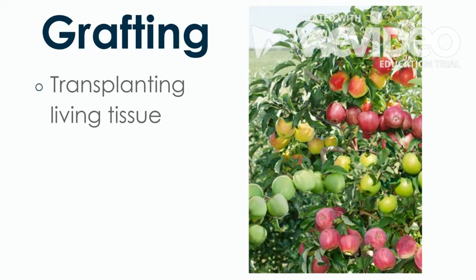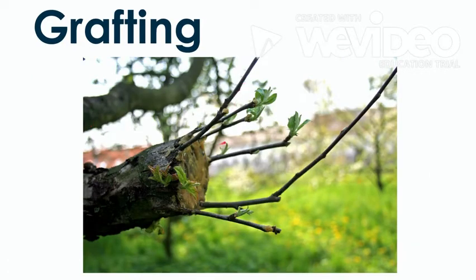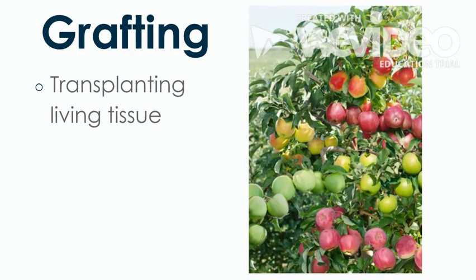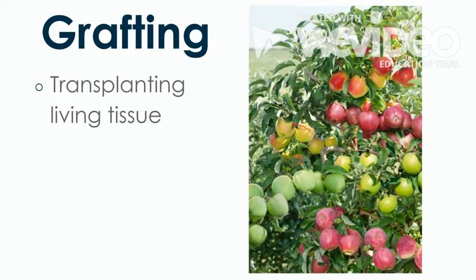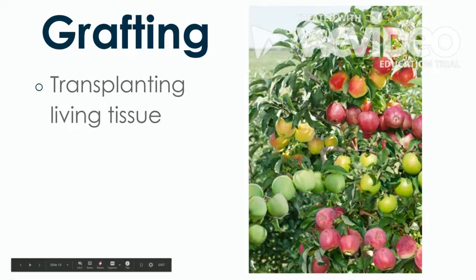Here's something fun: this is all one tree. You can take one root stock and graft onto it red delicious, granny smith, golden delicious, honey crisp — whatever type of apple you want — and have all those apples growing on one tree just because you grafted twigs from a variety of trees. The definition of grafting is basically transplanting living tissue. Those twigs are living tissue transplanted from another tree onto this one. I've always wanted to do that, to be honest.